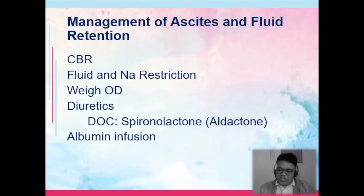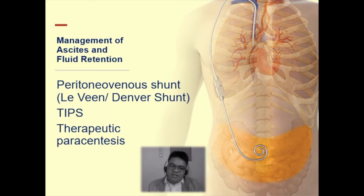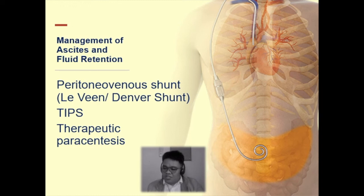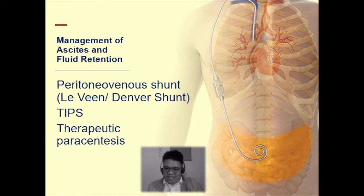Assess for degree of edema — pitting edema. A peritoneovenous shunt such as the LeVeen or Denver shunt may be used; the shunt goes from the GI tract toward the vena cava, bypassing the portal vein so it will not be congested. TIPS — transjugular intrahepatic portosystemic shunt — is shown on the next slide. Therapeutic paracentesis involves extracting fluids inside the peritoneum to relieve the patient of pressure.